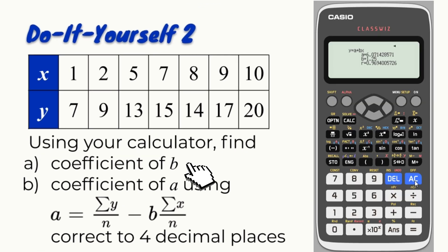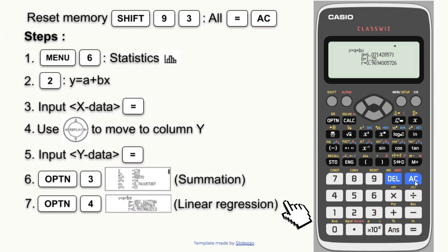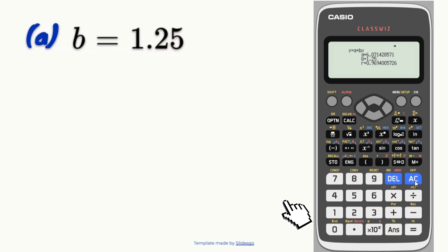For do-it-yourself 2, use the final step to find the coefficients of linear regression. B is 1.25.